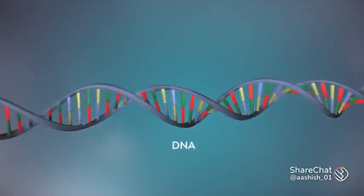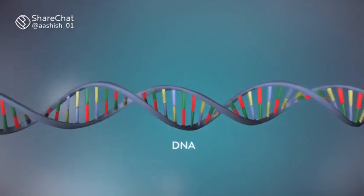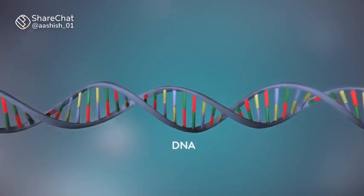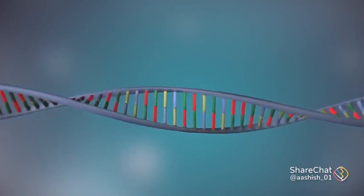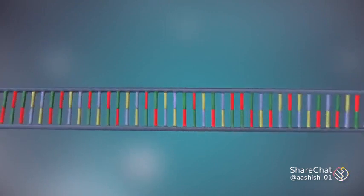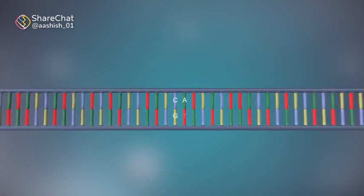DNA is a molecule made up of two strands twisted around each other in a double helix shape. Each strand is made up of a sequence of four chemical bases, represented by the letters A, C, G, and T.